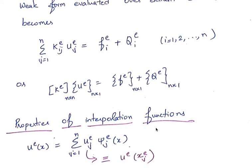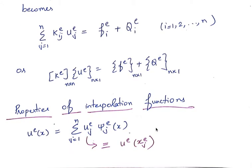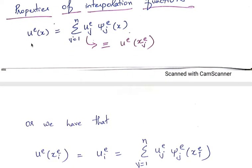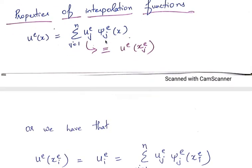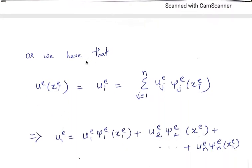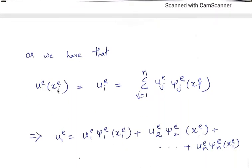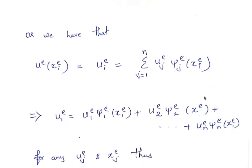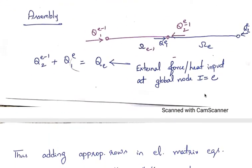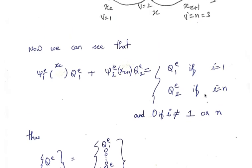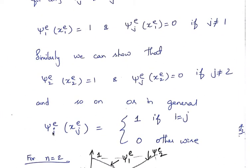For the properties of the interpolation functions: since the statement must always be valid within an element, evaluating u^e at the nodes shows that u_{ei} must equal the nodal value. From this we derive that the interpolation function has value 1 at the corresponding node and 0 at all other nodes. So psi_{e1} has value 1 at local node 1 and 0 at all other local nodes.